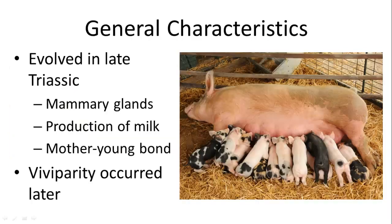The general characteristics of mammary glands, the production of milk, and the social bond between mother and young — which is variable in its importance in the development of young — probably occurred in the late Triassic period. Live birth, which is sometimes attributed to mammals, although there are non-live-bearing mammals in monotremes, occurred later after these developments.